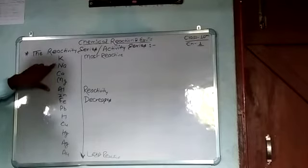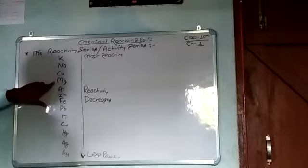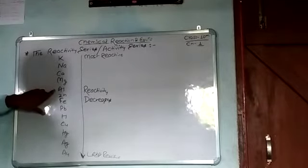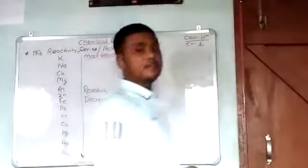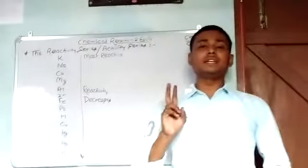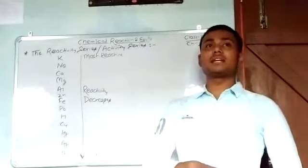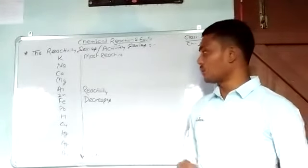Potassium is more reactive than Sodium. Sodium is more reactive than Calcium. Calcium is more reactive than Magnesium. Magnesium is more reactive than Aluminium. Aluminium is more reactive than Zinc. By this series, we can determine which of two elements is more reactive than the other.